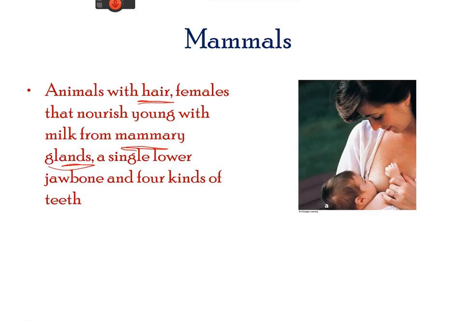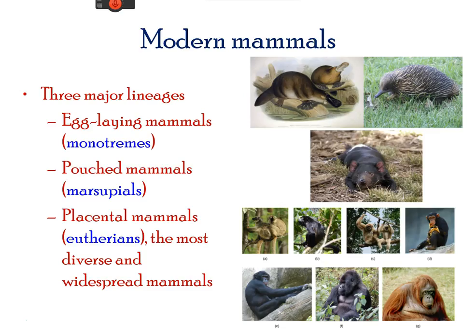Mammals are vertebrates that have hair and mammary glands, used to provide nutrition for their young ones. There are three living lineages of mammals: egg-laying, pouched mammals, and placental mammals.